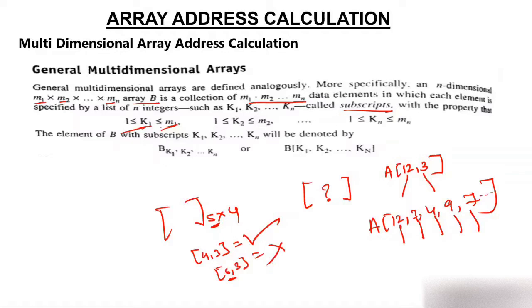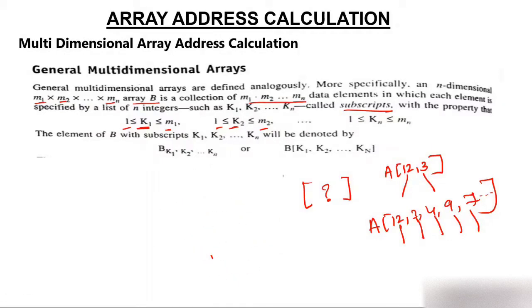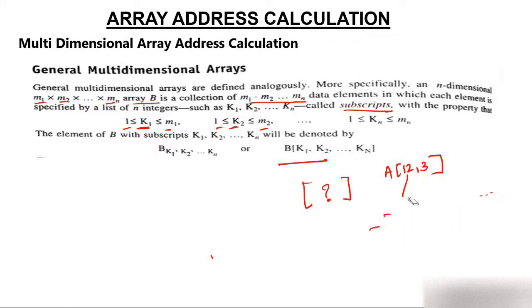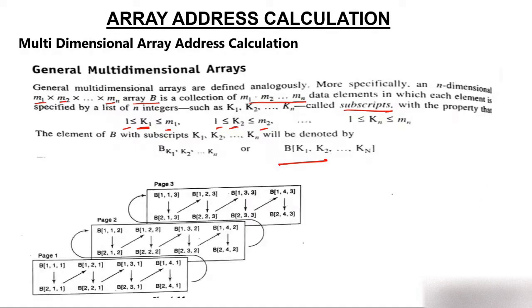Similarly, K1 should be less than M1 and greater than or equal to 1; K2 should be less than M2 and so on. To calculate the address, we use a specific formula. Now let's look at the 3-dimensional representation — we've already covered 1D and 2D, and now we move to 3D.